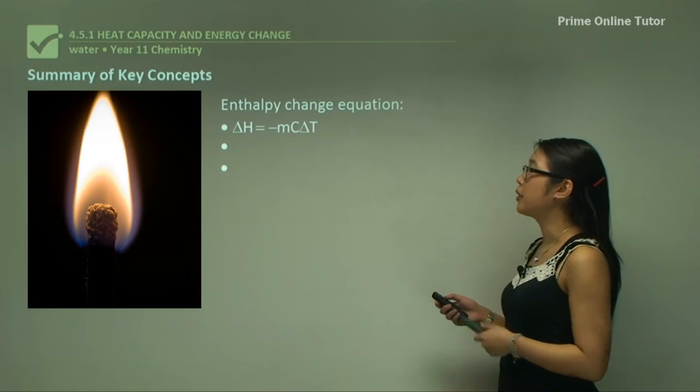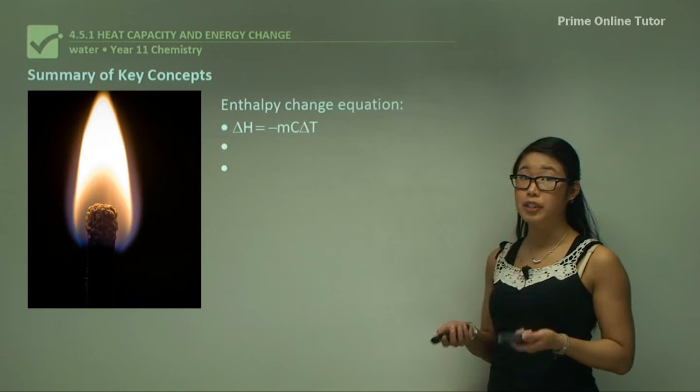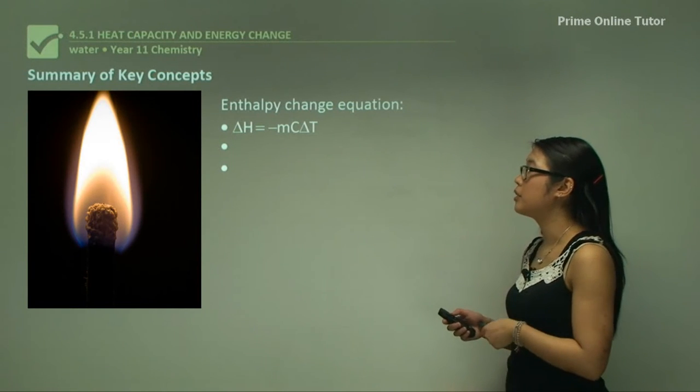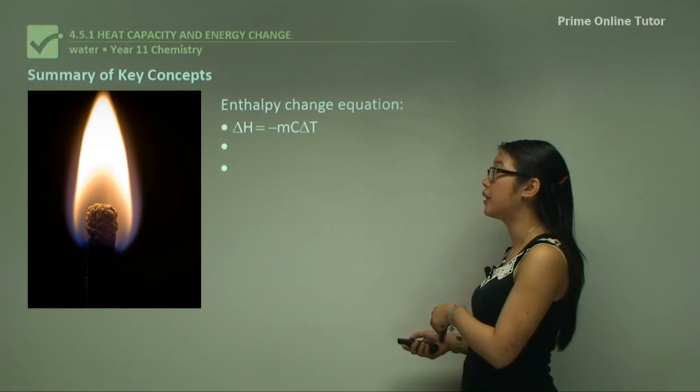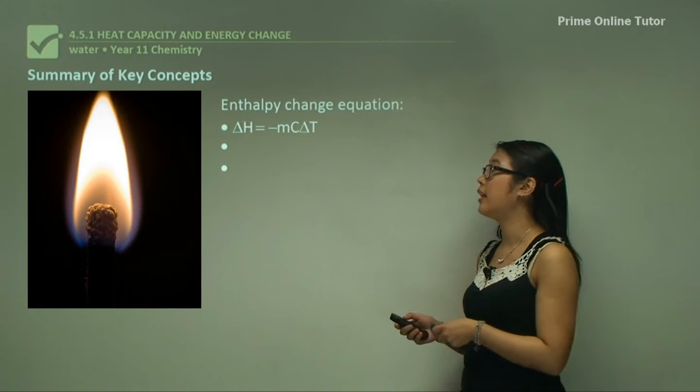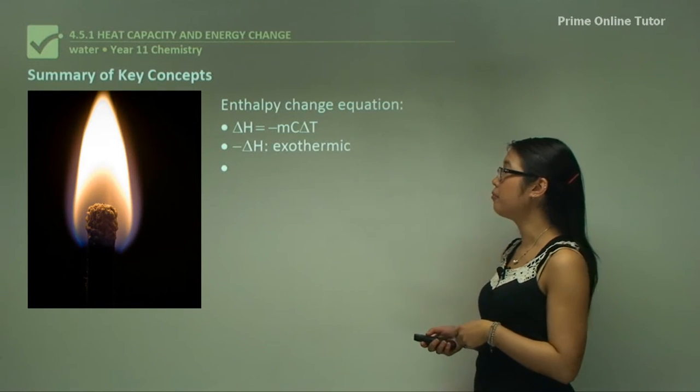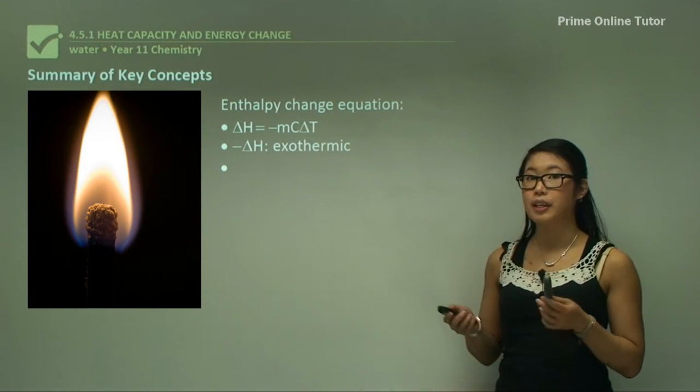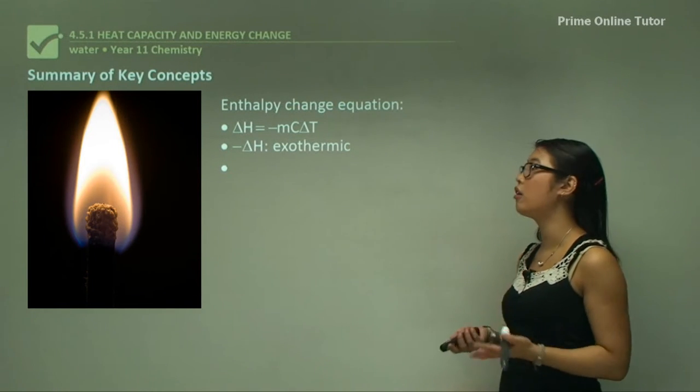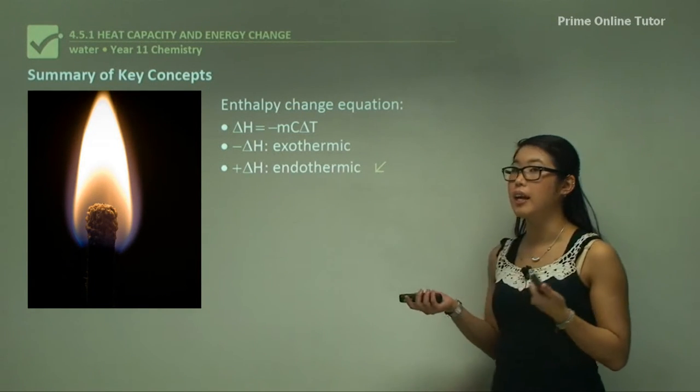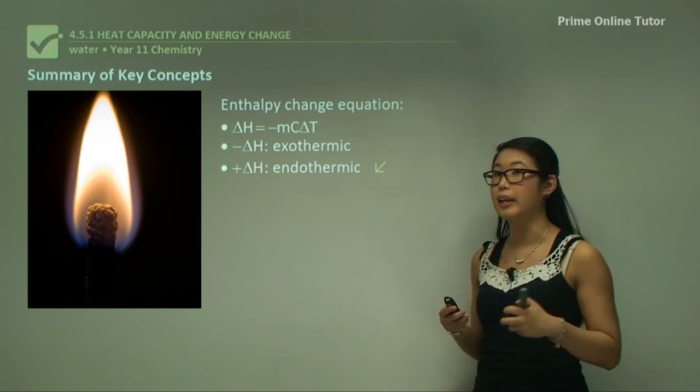The enthalpy change equation is ΔH equals negative mass times the specific heat capacity C times the change in temperature. The negative indicates exothermic, releasing heat and feeling hot, and positive is endothermic or keeping the heat in.